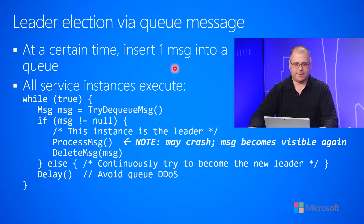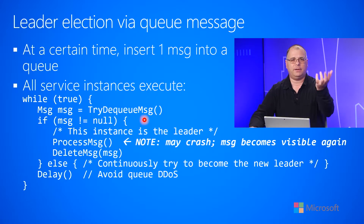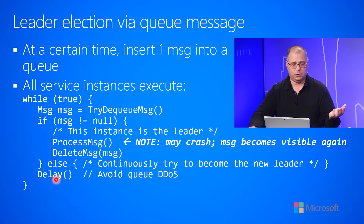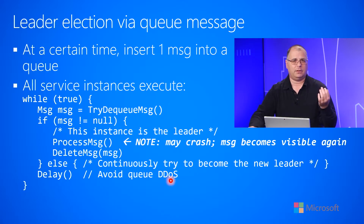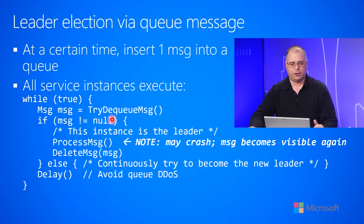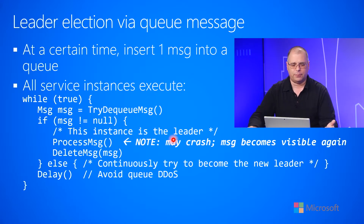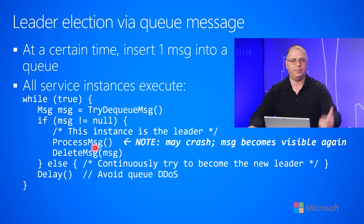So that instance — if we go through the code — all instances are in an infinite loop, while true. They're all trying to dequeue a message from the queue. Most of the time the message comes back with null because there is no message in the queue. In that case we just delay so that we don't do a denial of service attack against the queue itself, then loop back around. But eventually some instance will go and get the queue message. That instance is now the leader and it's supposed to do the billing report or whatever the work is that needs to be done. It goes and now processes that message, which means it does the billing.